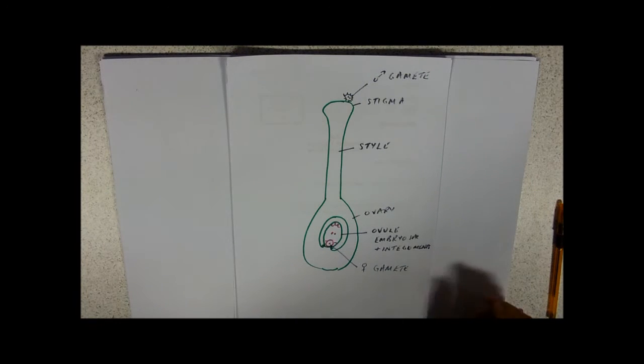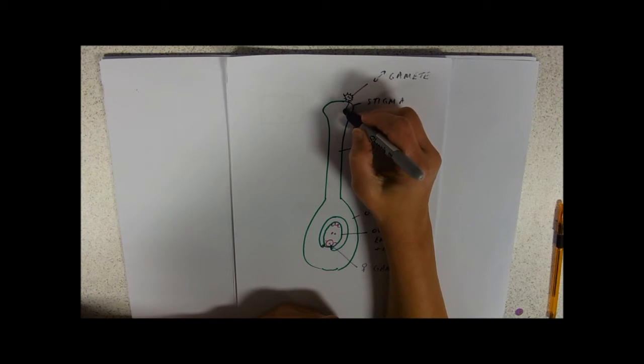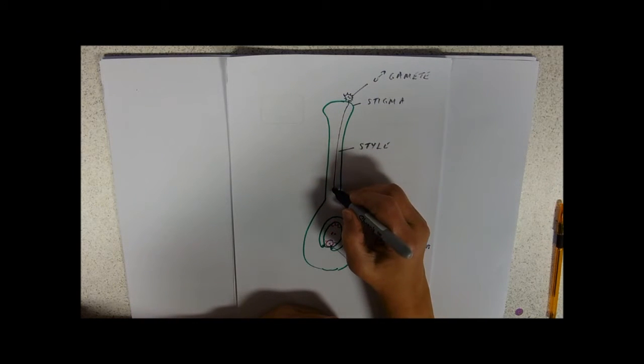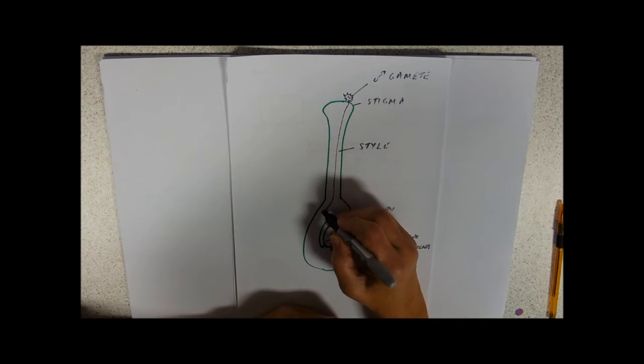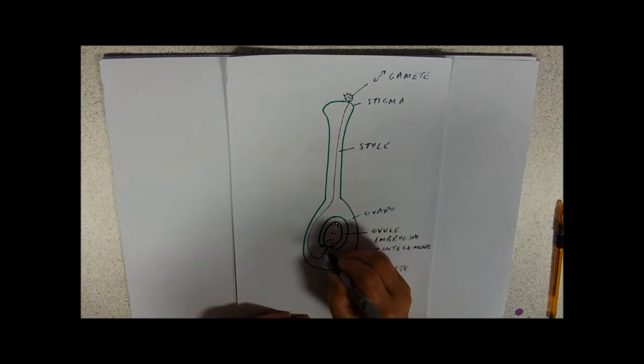So here we go on to fertilization proper. After the pollen tube has grown down, it's digested its way down through the style, digests itself around through the ovary, and it's actually going to enter the embryo sac via the micropile.